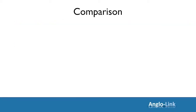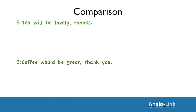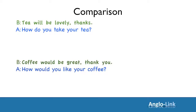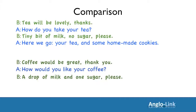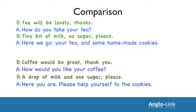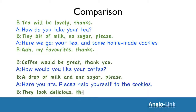Let's look at the third section of the two dialogues and compare the styles. Informal: 'Tea will be lovely, thanks.' Formal: 'Coffee would be great, thank you.' Informal: 'How do you take your tea?' Formal: 'How would you like your coffee?' Informal response: 'Tiny bit of milk, no sugar please.' A bit more formal: 'A drop of milk and one sugar please.' Informal: 'Here we go — your tea and some homemade cookies.' Formal: 'Here you are. Please help yourself to the cookies.' Informal: 'Ah, my favourites, thanks.' Formal: 'They look delicious, thank you.'